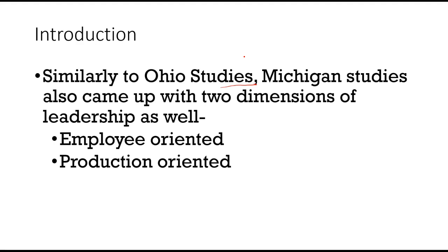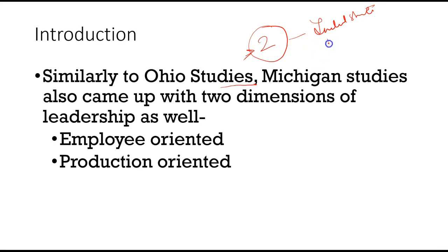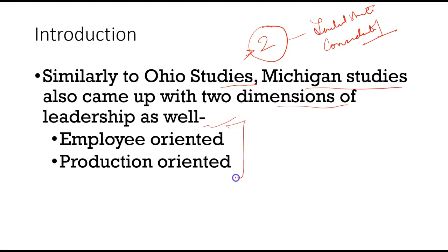Michigan studies came up with two dimensions. Ohio studies also had two dimensions — those were initiating structure and consideration. Similarly, Michigan studied thousands of behavioral dimensions and finally concluded with two: one was called employee oriented, and the other was called production oriented.